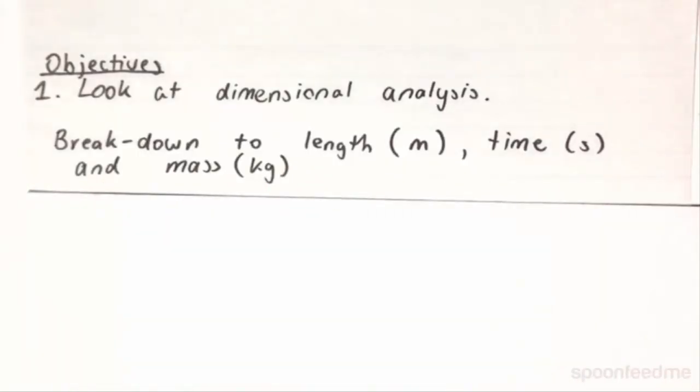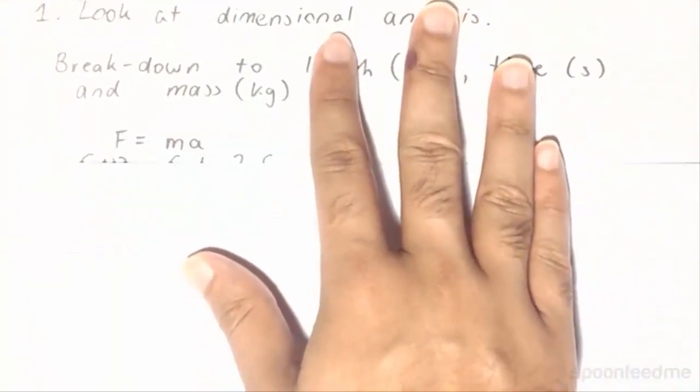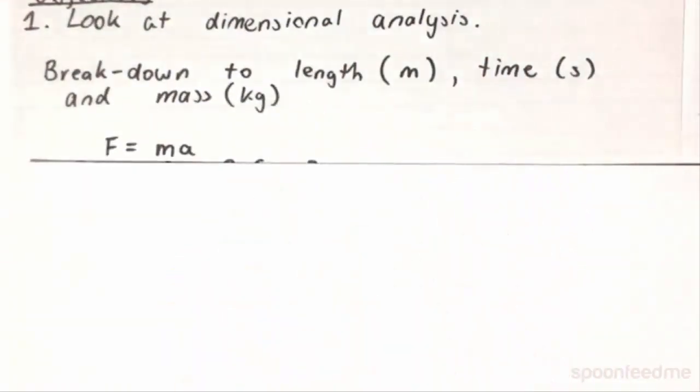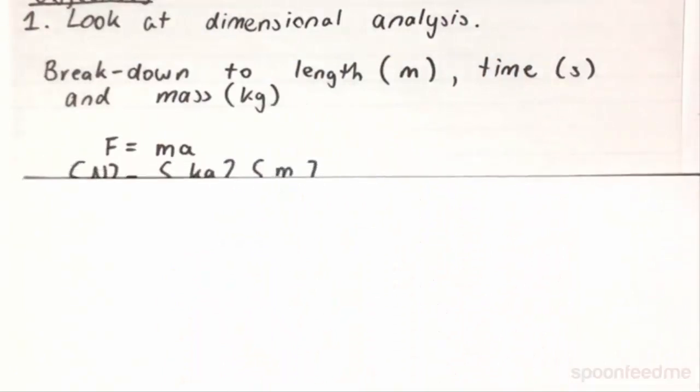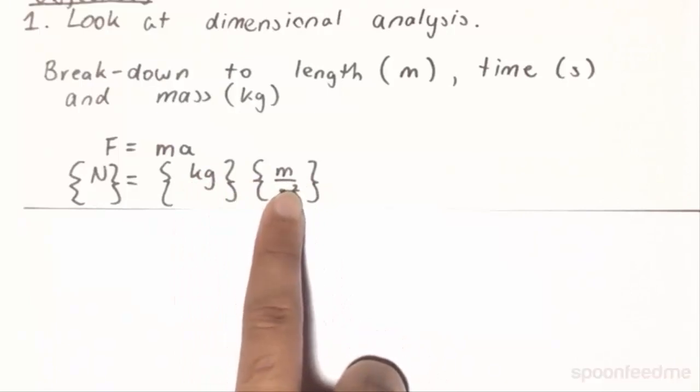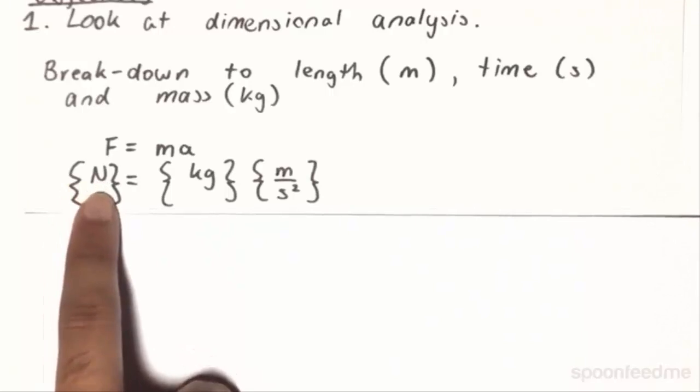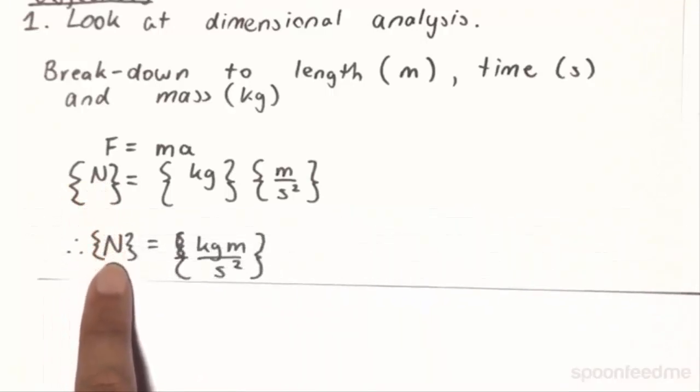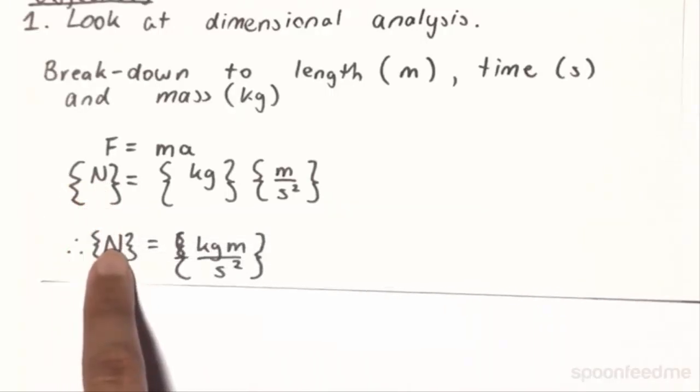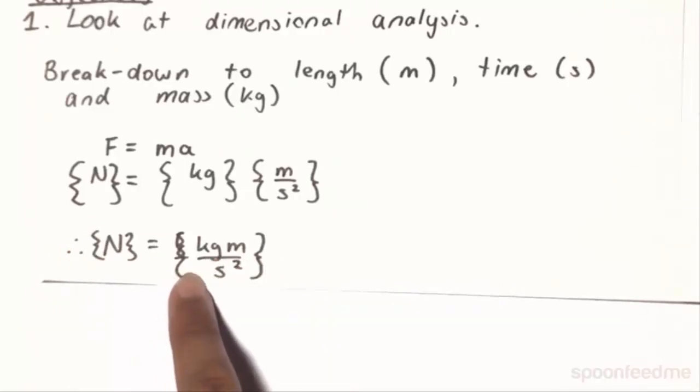So let us begin with a simple example. Force is defined by the mass times the acceleration by Newton's second law. So mass is in kilograms, acceleration is going to be in meters per second squared, and the force is generally measured in newtons. So essentially what this dimensional analysis is telling us is a newton is going to be equivalent to 1 kilogram meter per second squared.